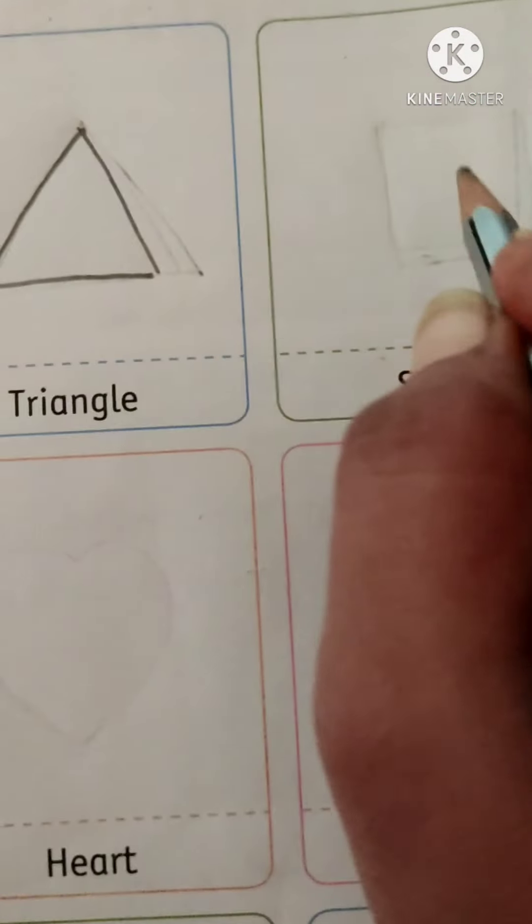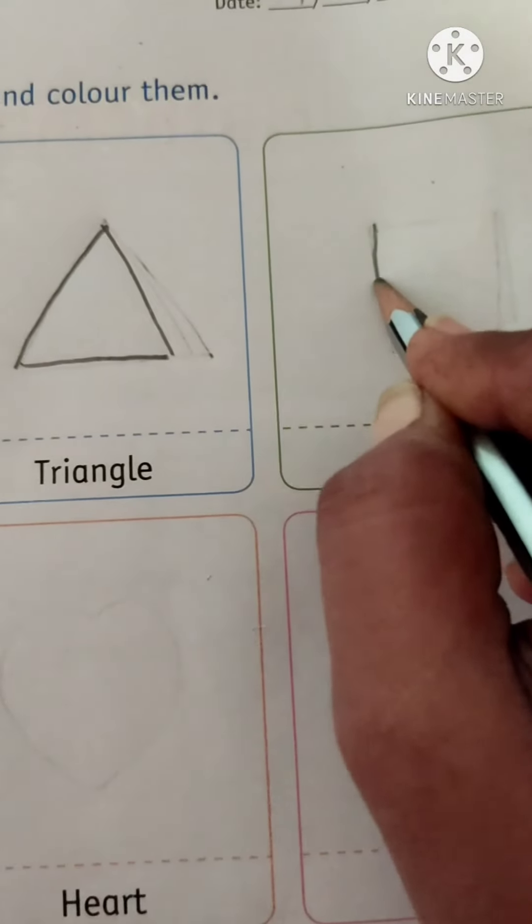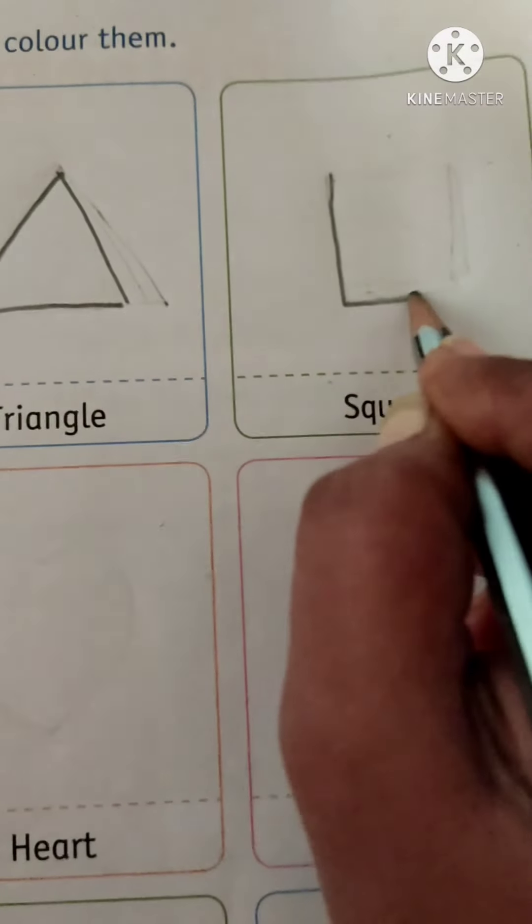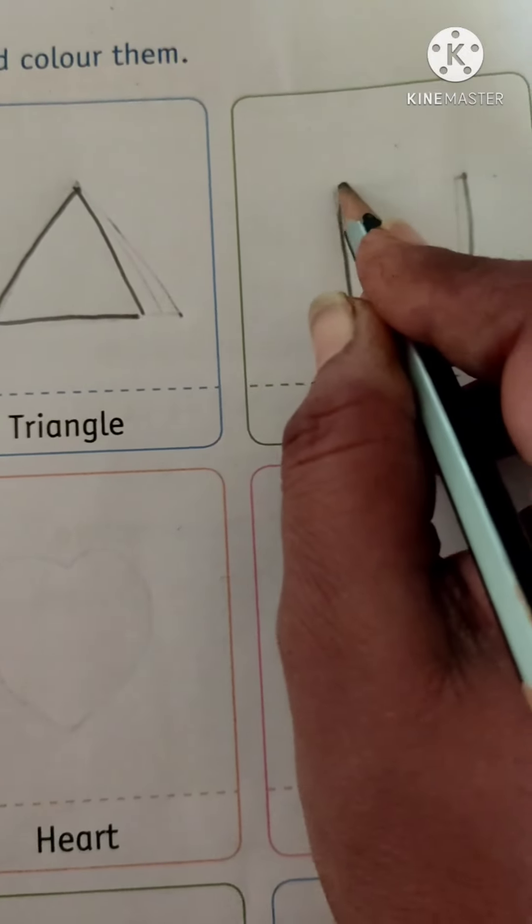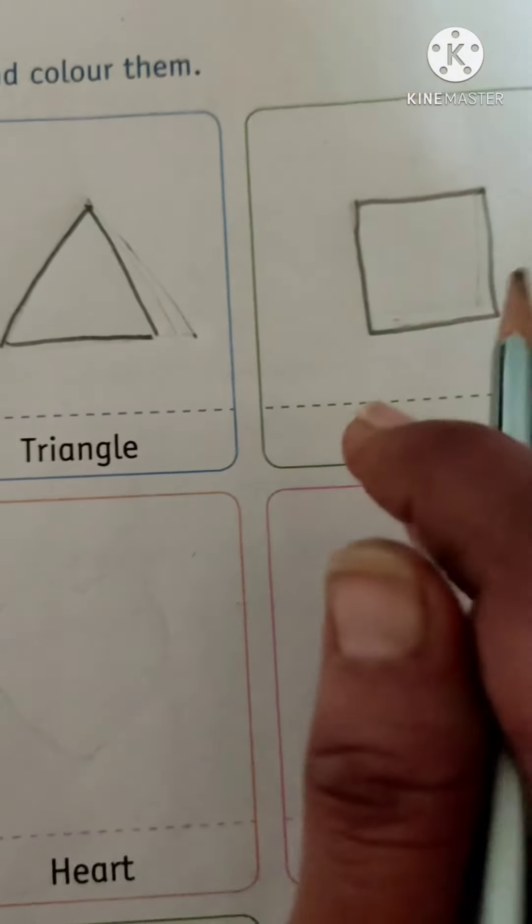Now, square. So, draw square. This is square.